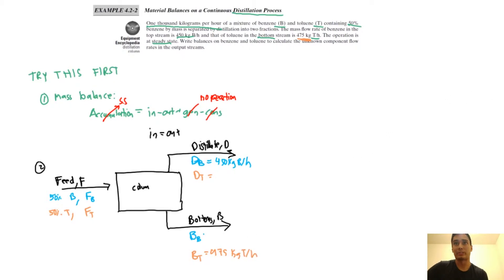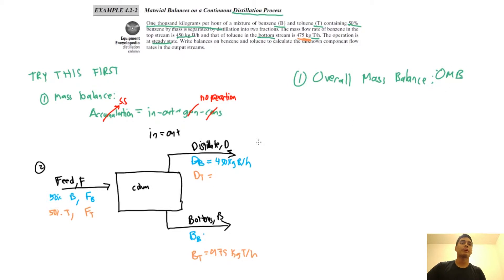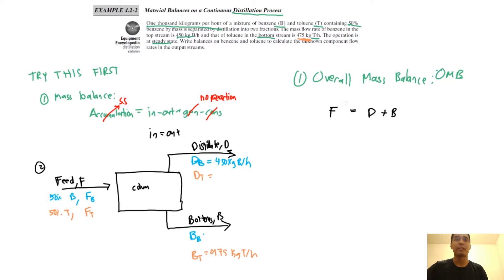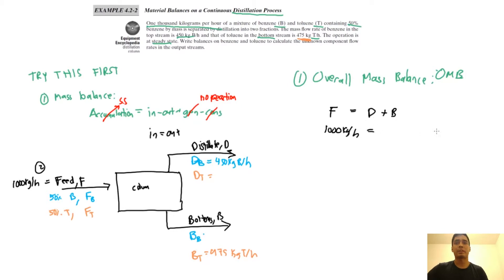Now we do our mass balances — there are three we can do here. First is the overall mass balance (OMB). The feed equals D plus B, meaning the feed flow rate equals the distillate plus the bottoms flow rate. The feed is 1,000 kg per hour. We don't have D and B yet, but we're doing a system of equations, so once we figure those out we can come back and calculate.